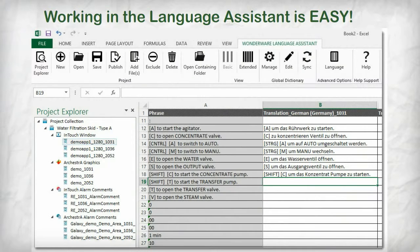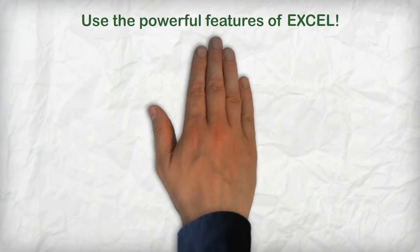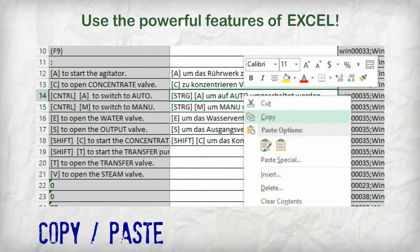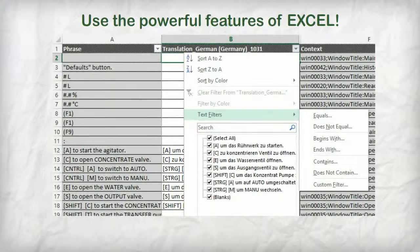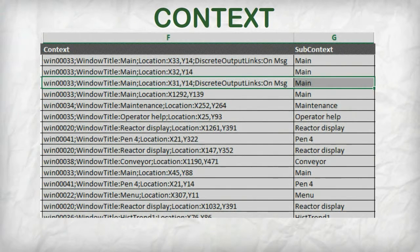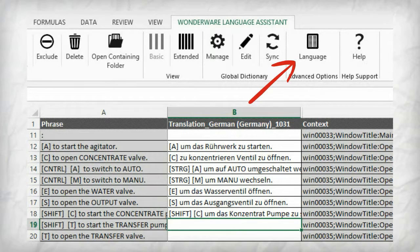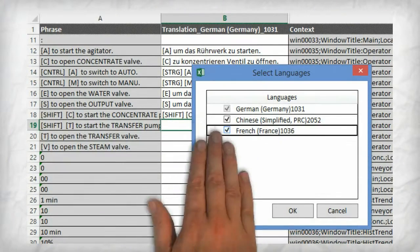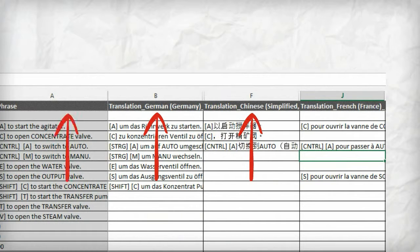The Language Assistant makes it easy. You simply enter the translation right next to the original phrase. And because it's an Excel Add-in, you can take advantage of the rich feature set in Excel, like the powerful search and filter tools to help you find the phrases that you want to translate. Use the context columns to help understand the context that the phrase is being used in. Are you amazing and know multiple languages? Just click on the Language button and select the languages that you want to translate side-by-side.